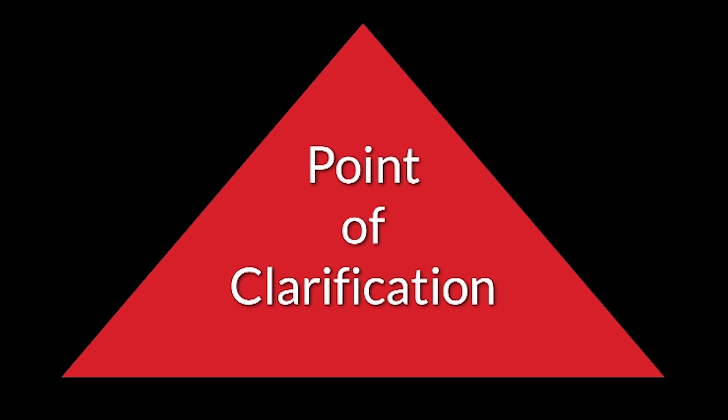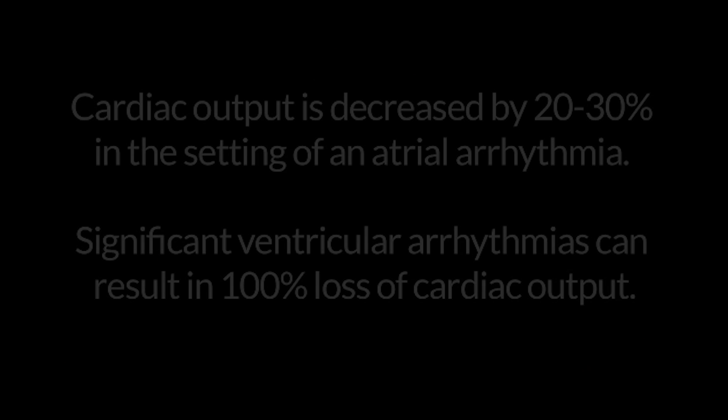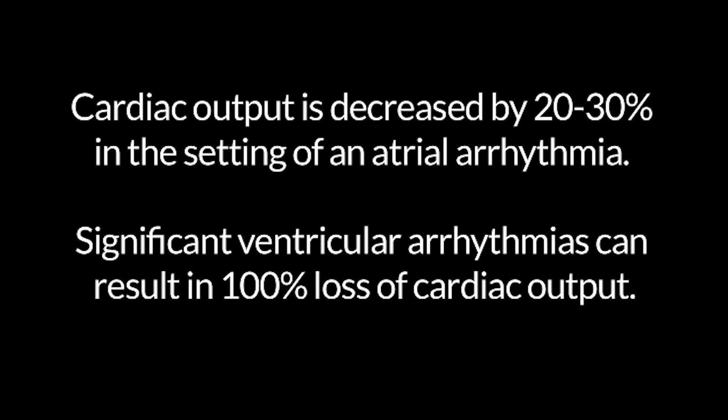Point of clarification: cardiac output is decreased by 20–30% in the setting of an atrial arrhythmia. Significant ventricular arrhythmias can result in a 100% loss of cardiac output.